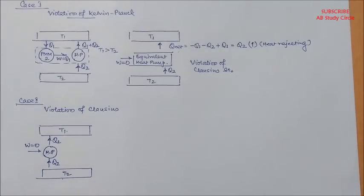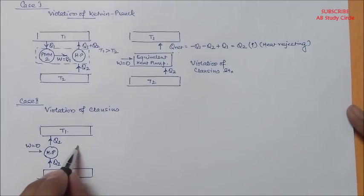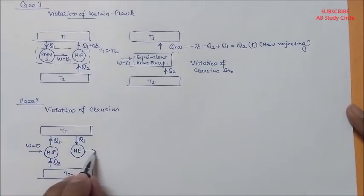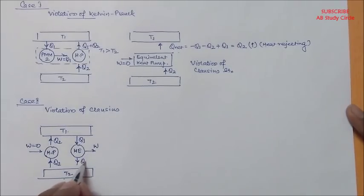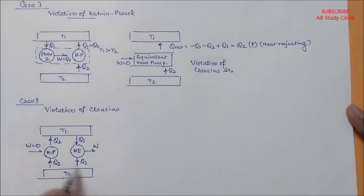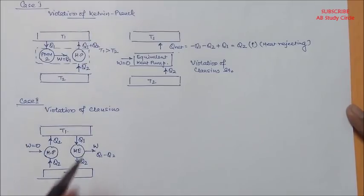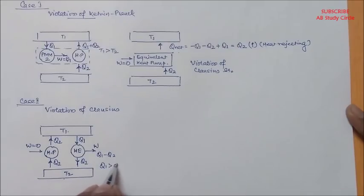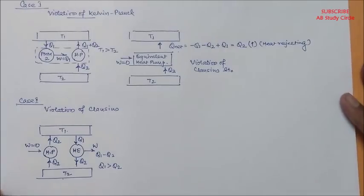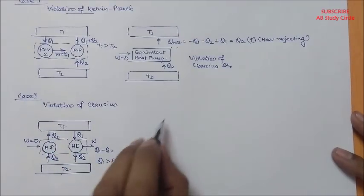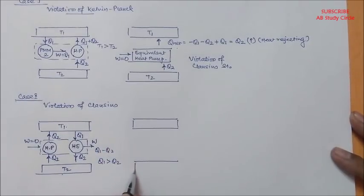Now let's construct a heat engine according to your Kelvin-Planck statement. Let's construct this heat engine which is receiving Q1 amount of heat from the thermal reservoir maintained at temperature T1, delivers some amount of work, and rejects the rest of heat Q2. Suppose Q2 amount of heat is rejected to the thermal reservoir maintained at temperature T2, then the work will be equal to Q1 minus Q2, and here it is obvious that Q1 will be greater than Q2. Now I will be combining these two devices and creating an equivalent heat engine, and then we will analyze the work transfers and heat transfers accordingly.